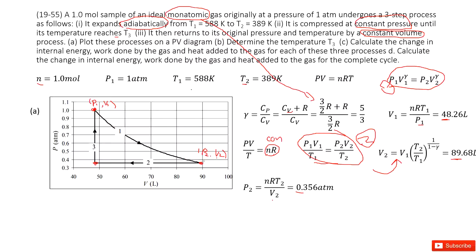Then at the same pressure P2, it moves back to volume V1. Then at the same volume V1, it comes back to the origin point. In this way, you are done plotting the PV graph.